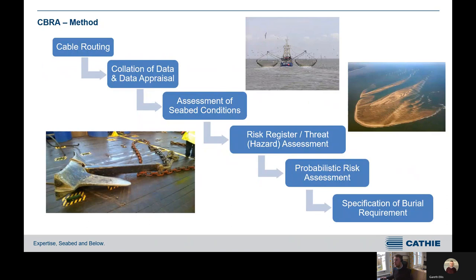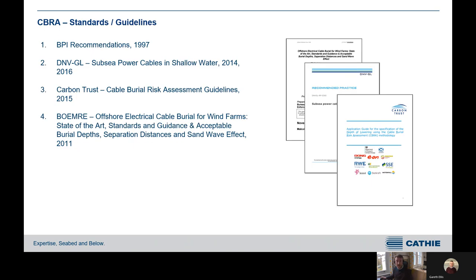This is the typical process we work through in the CEBRA: cable routing occurs, we collate and appraise the data, assess the seabed conditions, do a hazard assessment — that probabilistic quantitative approach — and then that specifies the barrier requirements. These are things defined by the Carbon Trust guidelines, and this is the development of practice over the years, starting with BPI recommendations, DNV guidance, and the Carbon Trust information that we tend to use today.